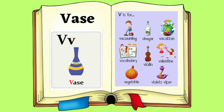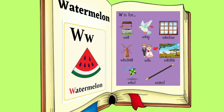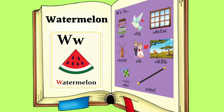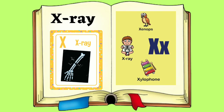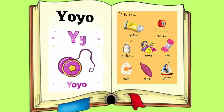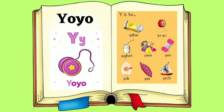Umbrella. V for Vase. V, V. Vase. W for Watermelon. W, W. Watermelon. X for X-Ray. X, X, X.